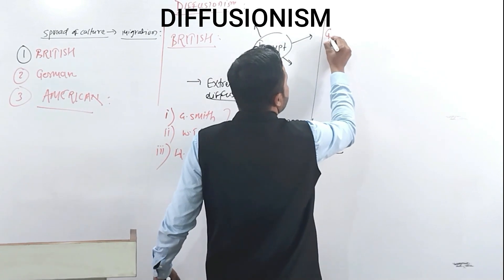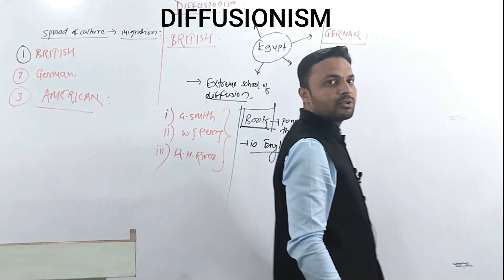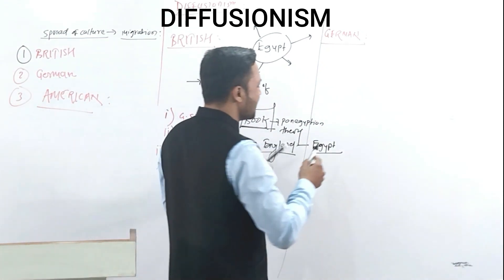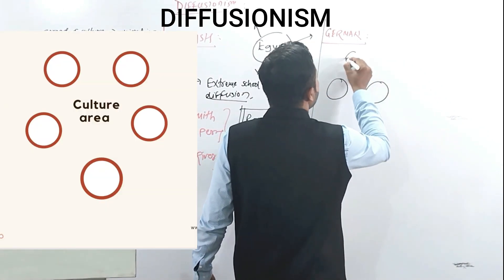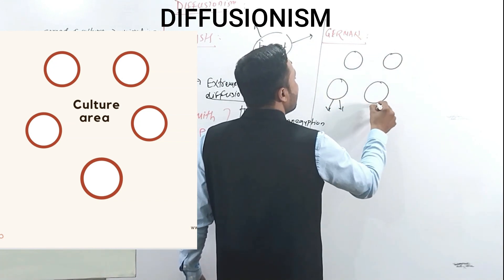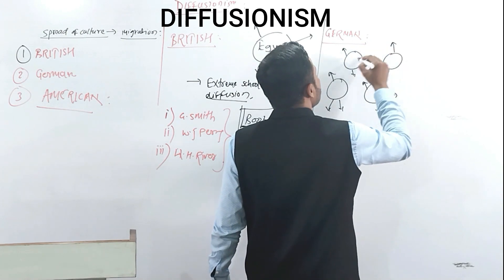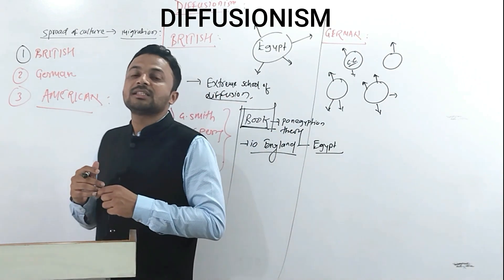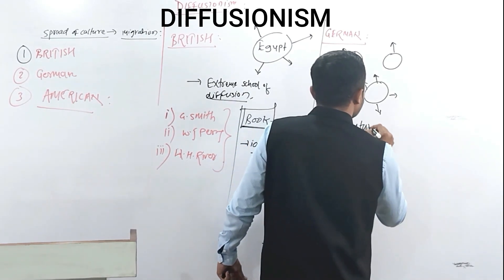The second school of thought is the German school of thought. This is less extreme compared to the British school. German school of thought says there are many different culture centers at different parts of the world, where different cultures originated over different periods of time, and from there culture migrated to other places. This school of thought is also called the Culture Area school of thought.